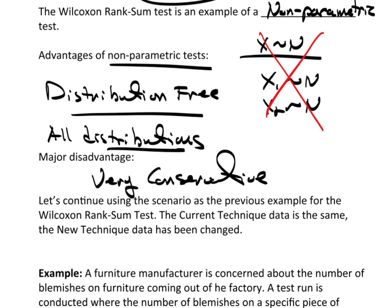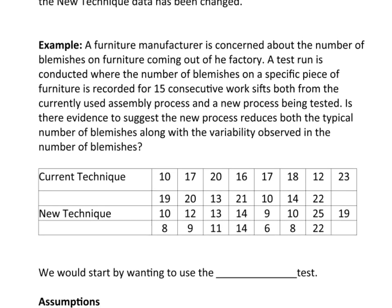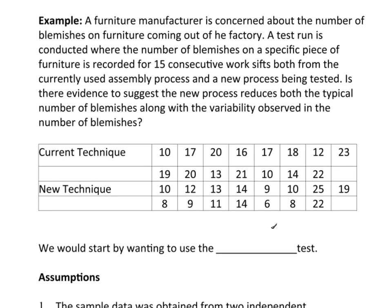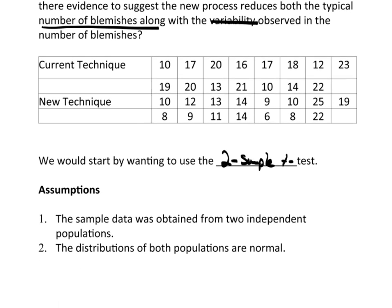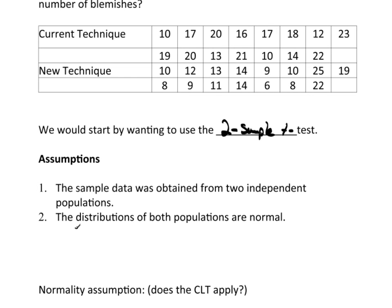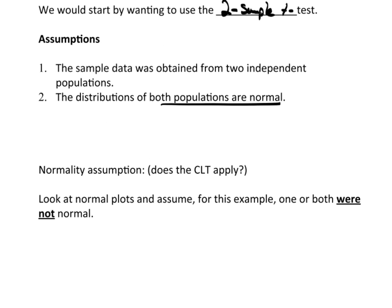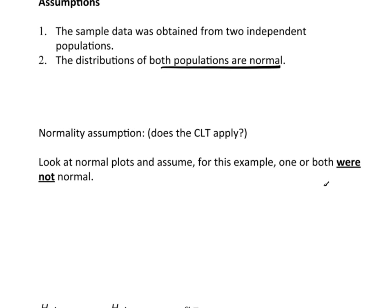So, we're going to continue using the exact same scenario that we've been working on. It's the same furniture data, the exact same scenario. Now, we'd want to start off by using the two-sample t-test. And here, what we're going to be emphasizing is the number of blemishes. We're not going to address the variability here. Now, the assumptions, we've already gone through them. A sample is obtained for two independent populations, and the distribution for both populations are normal. Well, we've already discussed a couple of times why these are independent, two different machines. And we've already looked at the normal plots.